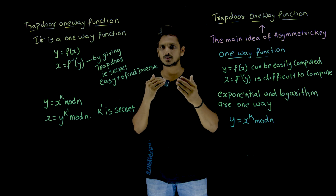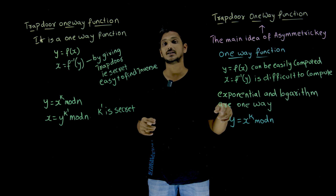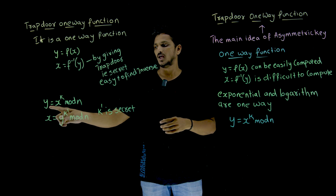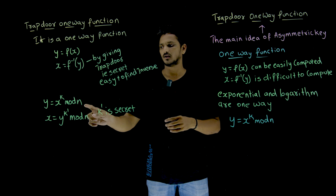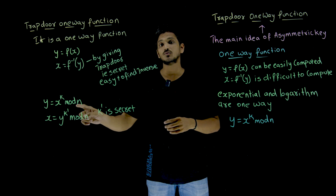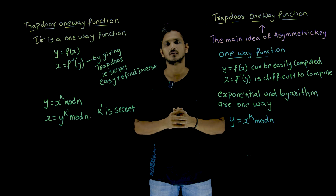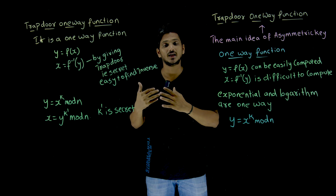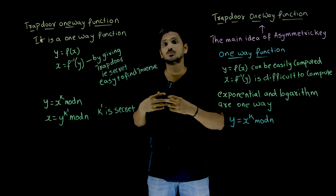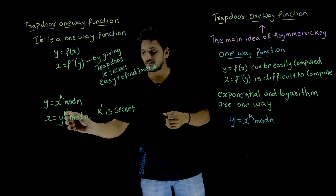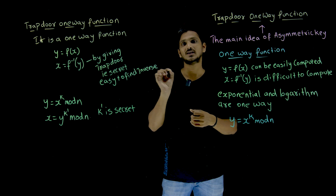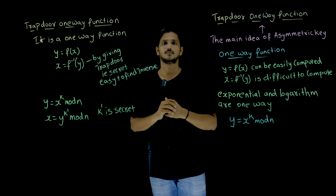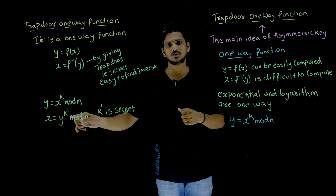So does our exponential and logarithm work as a trapdoor function? Yes. Let's take y = x^k mod n, so x = y^(k⁻¹) mod n. Here k⁻¹ is the secret which is maintained at the receiver side — that is what we call the private secret key. If you have this k⁻¹, that secret, you can easily find x using y. This is what we call the trapdoor, meaning the secret.